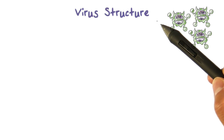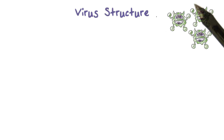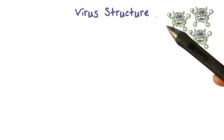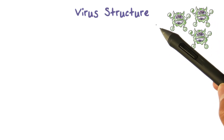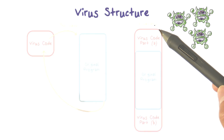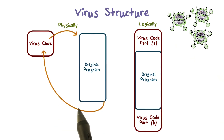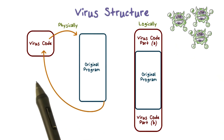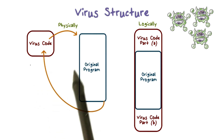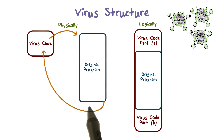Now, let's discuss some of the details of viruses. First, let's take a look at the structure of a virus. A virus infects a program by modifying the program code. That is, the virus code has to be physically inserted into the program file.